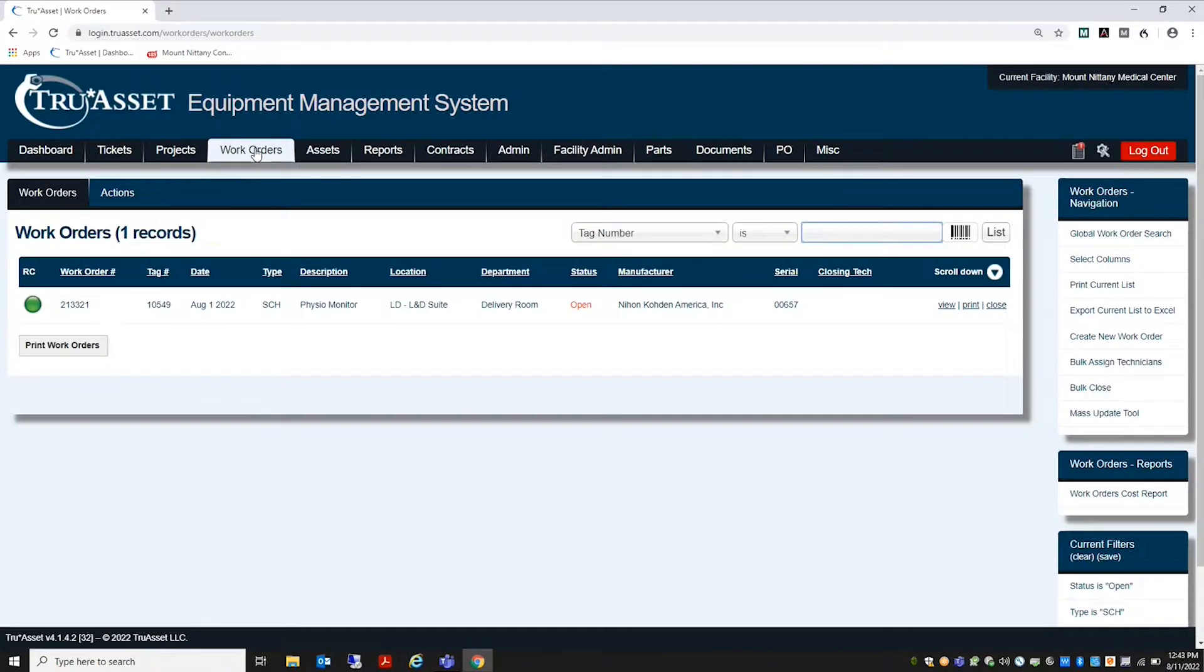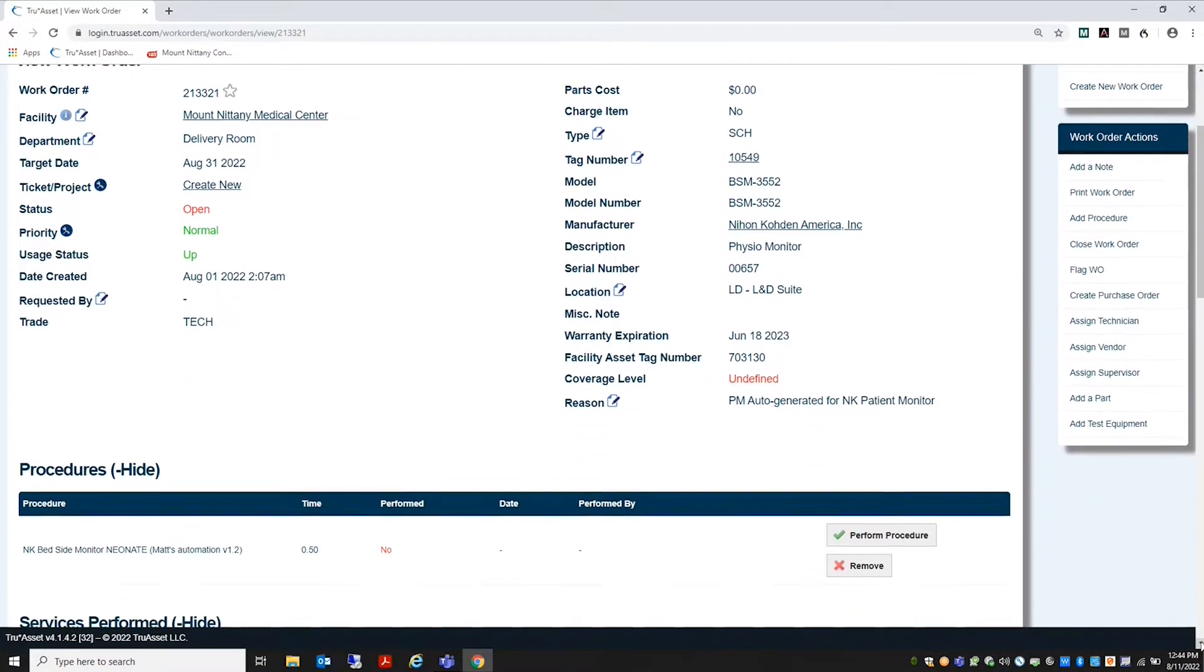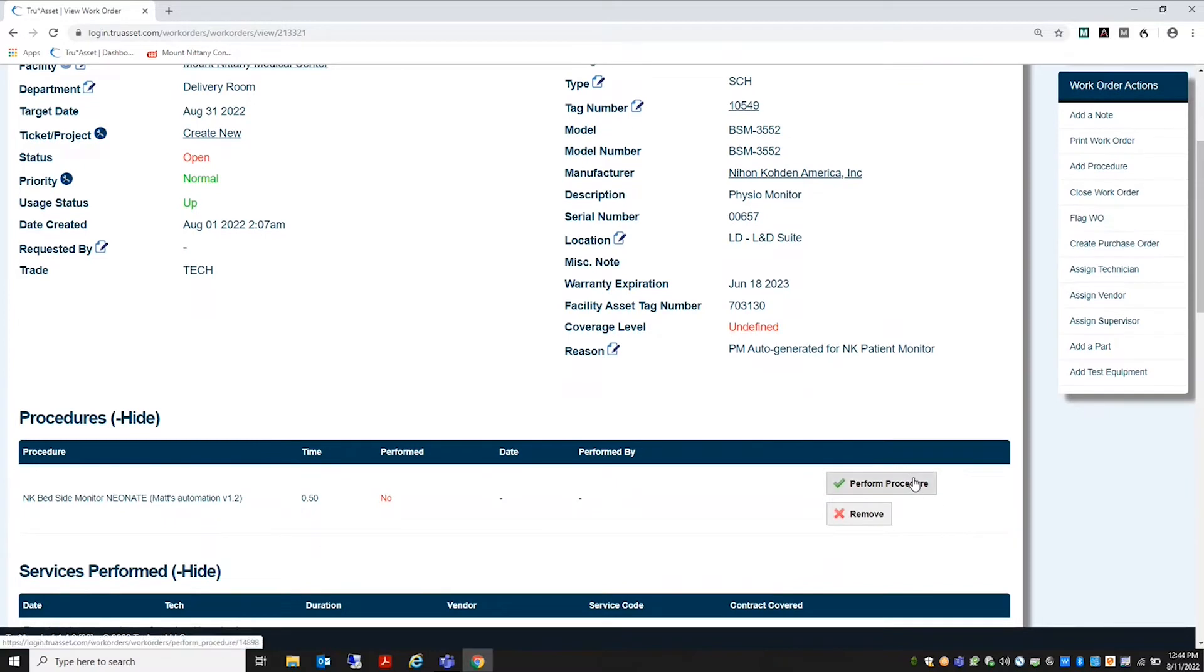I can have a ticket that comes in, I accept it as a work order, and say it's verifying a bedside monitor. I have at my fingertips through TrueAsset, I can add a Fluke 1QA procedure to that work order.